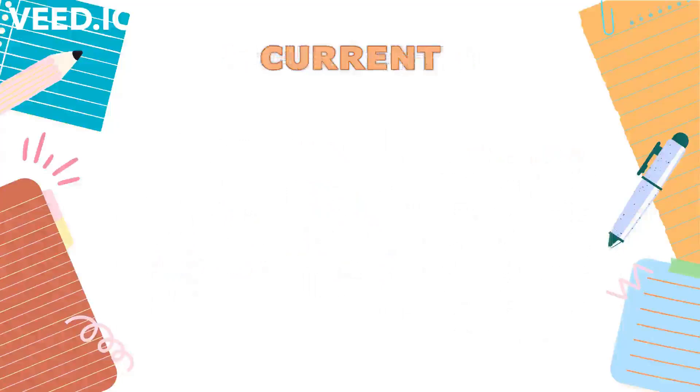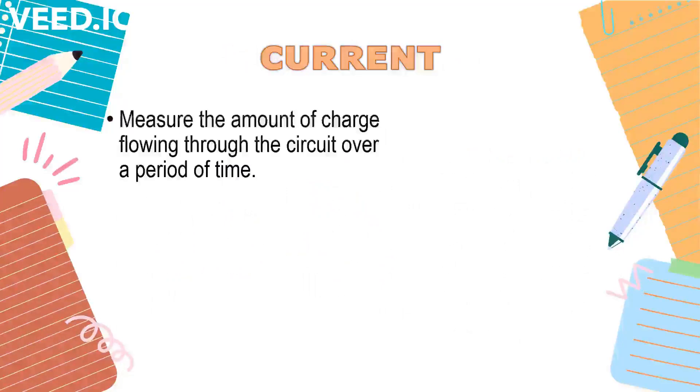So let's discuss more about current. In electricity, current measures the amount of charge flowing through the circuit over a period of time. These charges are free electrons from conducting wire. When there is flow of electric charges, an electric current is present.